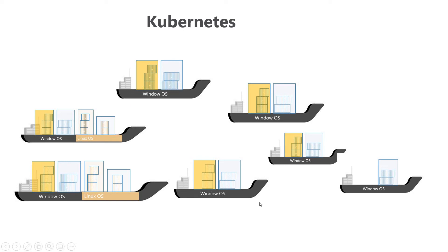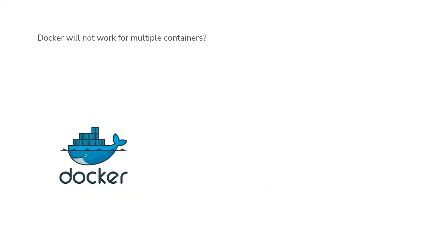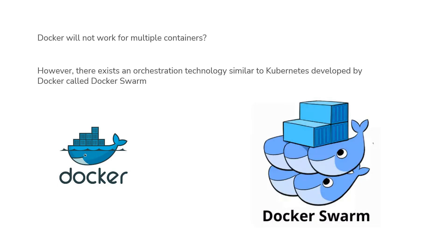Now the question is: will Docker not work for multiple containers? The answer is yes, Docker can do orchestration too. There is an orchestration technology similar to Kubernetes developed by Docker called Docker Swarm. But in this video we will discuss about Kubernetes only. Let's try to understand in more detail what Kubernetes is and why we need it.